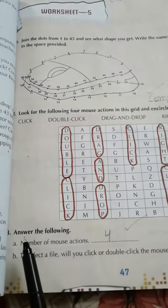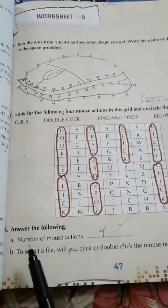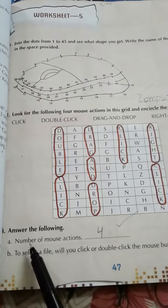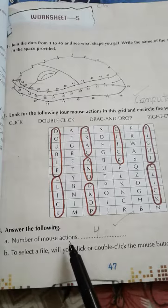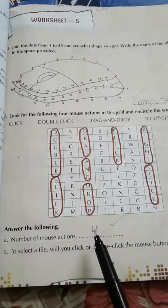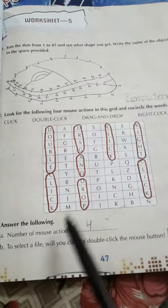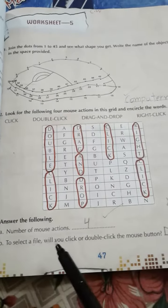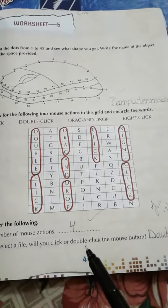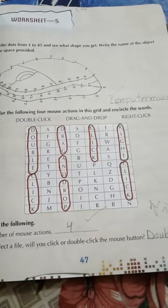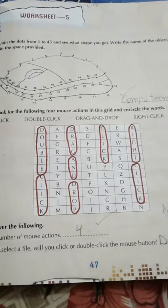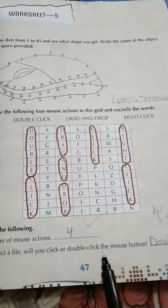Question number 3: Answer the following. Number of mouse actions: 4 - click, double click, drag and drop, and right click. To select a file, will you click or double click the mouse button? Answer: Click or double click.